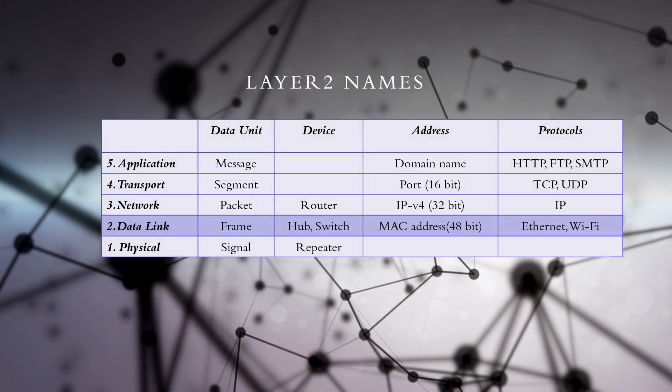As with other layers, there are particular names for data units, devices, and addresses in the data link layer. The unit of data is called a frame, which is a stream of bits packed in a frame. Hub and switch are Layer 2 devices that connect devices in a LAN. The Layer 2 address is called a MAC address, which is a universally unique address assigned to network interface controllers for communication within a LAN.